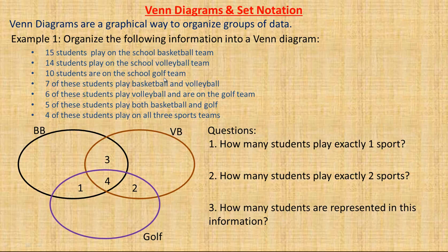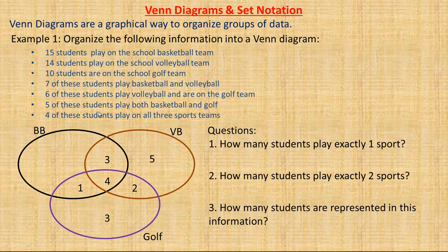Ten play on the school golf team. In the golf oval, one plus four plus two equals seven already, so I only need to put a three in the golf-only region to reach ten total. Fourteen play on the volleyball team — I've already got seven and two, which is nine, so I put a five in the volleyball-only region. Fifteen students are on the basketball team — I've already got eight, so I put a seven in the basketball-only region: seven, three, four, and one add to fifteen.